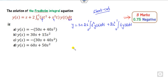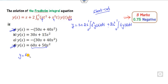Now what is the shortcut trick — how you can get the answers from the given options? Our technique is that we can discard the options. You can take any of the options and substitute the y value into the equation, and if you get back the same y, then that is the right answer.